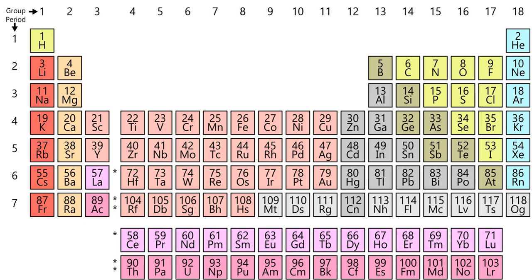The electron configuration, or organization of electrons orbiting neutral atoms, shows a recurring pattern or periodicity. The electrons occupy a series of electron shells numbered 1, 2, and so on. Each shell consists of one or more subshells named s, p, d, f, and g. As atomic number increases, electrons progressively fill these shells and subshells more or less according to the Madelung rule, or energy ordering rule.